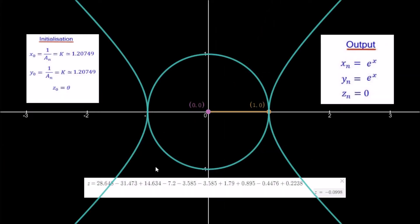We're going to be using hyperbolic rotation mode. The initial values for x0 and y0 are 1.20749, so I'll put those in now.